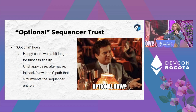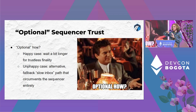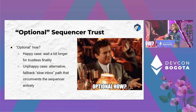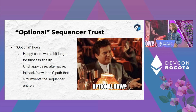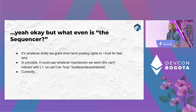In the unhappy case where the sequencer goes rogue and isn't answering, there is still a way to transact on Arbitrum — an alternative path that's slower and more inconvenient, but it works. The system can work without the sequencer entirely, so it's entirely optional, and that's why we can still call this thing a layer two.